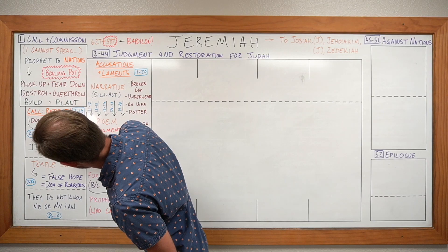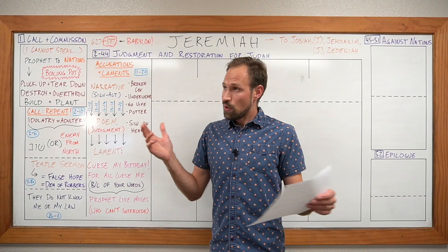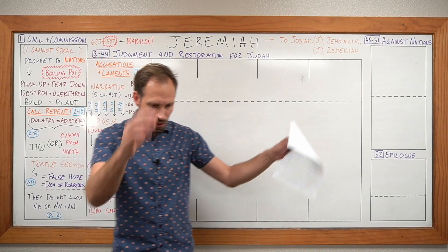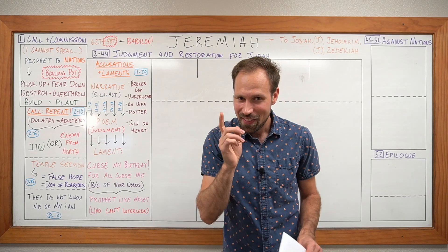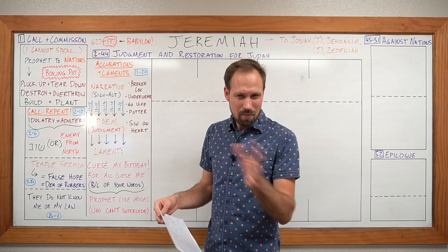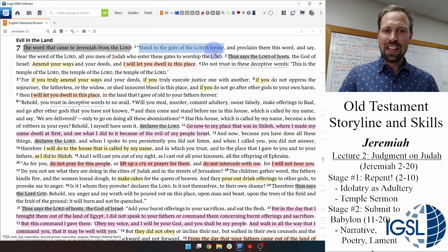All of this culminates in chapter seven, Jeremiah's temple sermon. I want to pause and talk about Jesus for a minute. Remember Jesus' triumphal entry — he gets on a donkey, rides into the city, goes up to the temple, and overturns the tables of the money changers, calling it a den of robbers. Where do you think Jesus got the idea to do this? He got it from Jeremiah, who did the very same thing, minus the donkey.